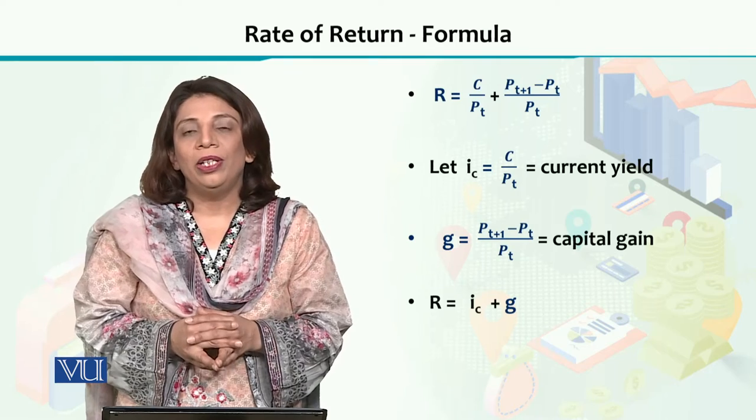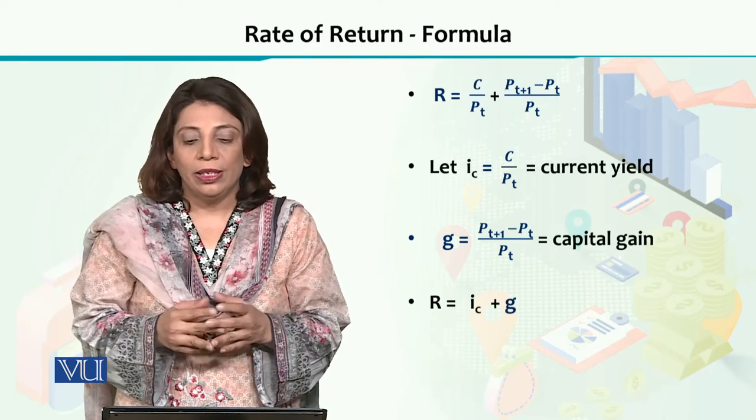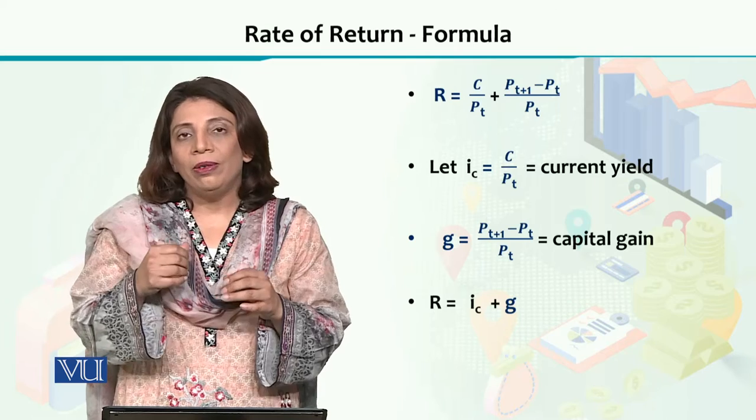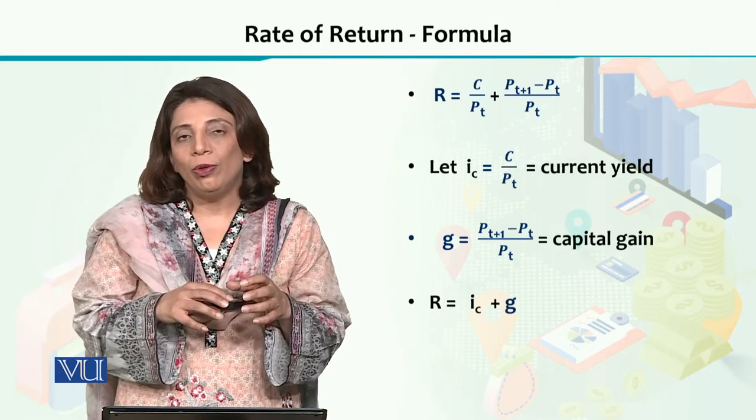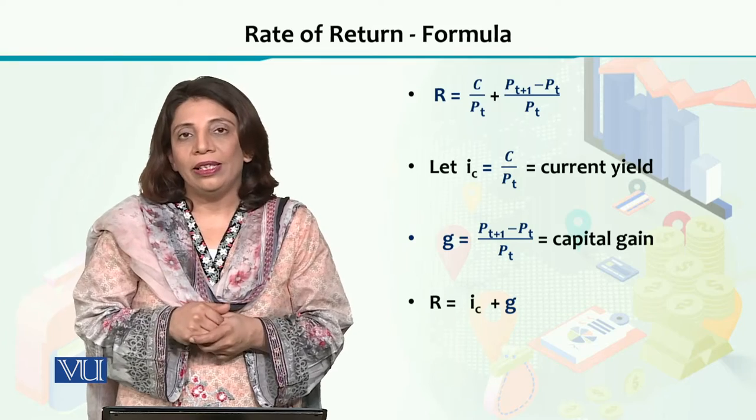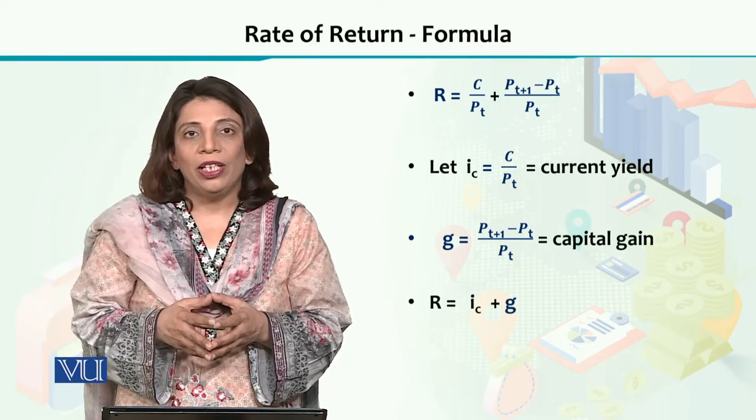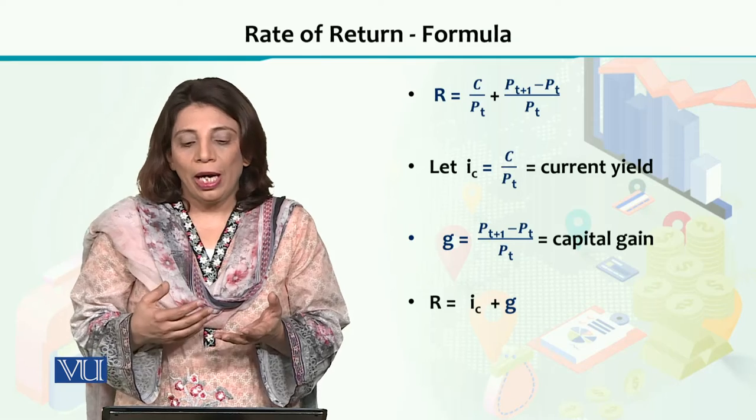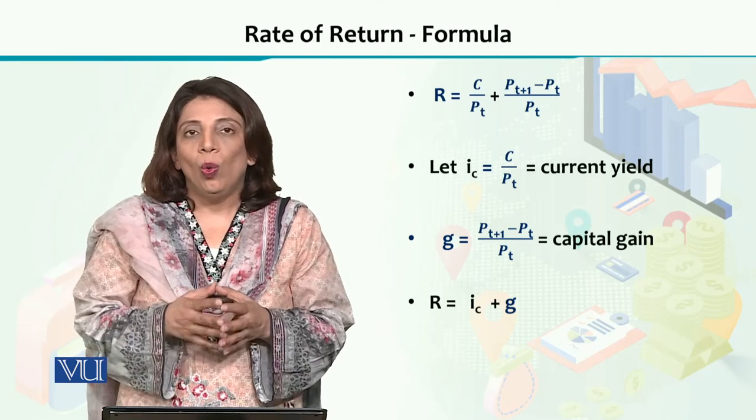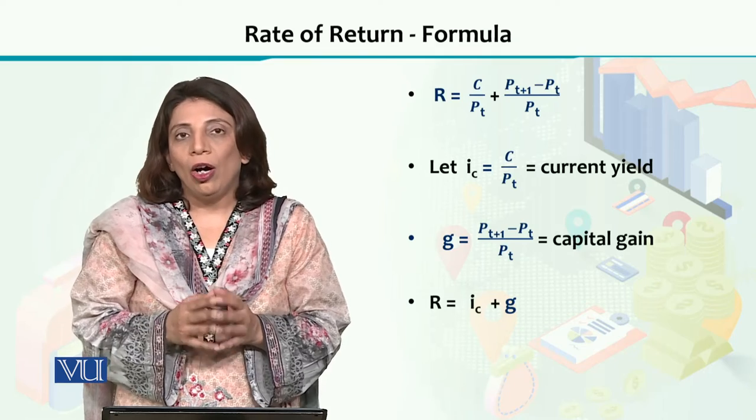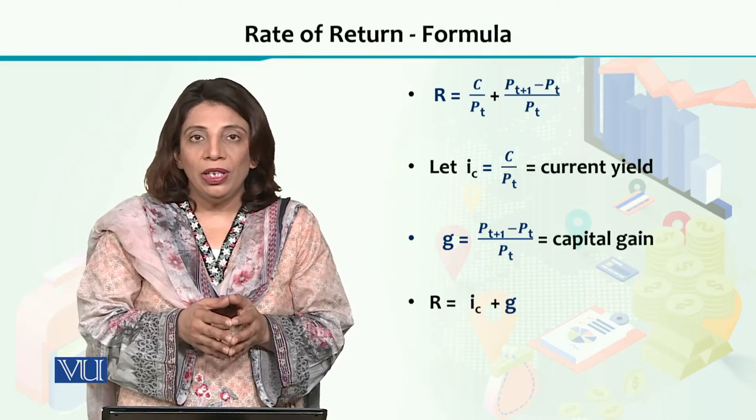And that has been abbreviated as small g. So simply we can write down the return formula in terms of the current yield and the capital gain as i_c plus g. And that is a simpler way of having a better understanding of what the rate of return is. So it is basically a combination of the current yield and the capital gain.